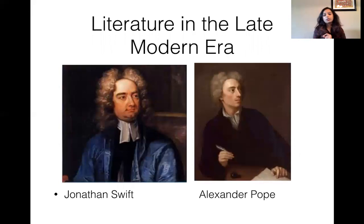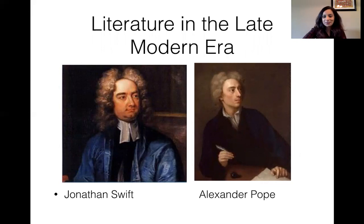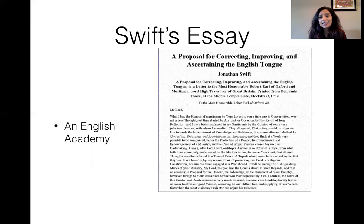Here are two images of Jonathan Swift and Alexander Pope — as is very common from pictures of that era, people always looked to the side. This is one of Jonathan Swift's essays that gained a lot of traction during that time. It's called 'A Proposal for Correcting, Improving, and Ascertaining the English Tongue,' and so he was really a prescriptivist — and we'll come to prescriptivism in a minute.